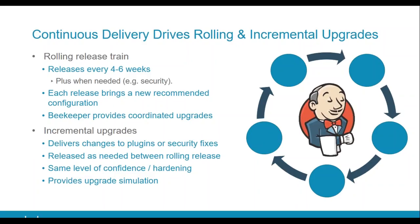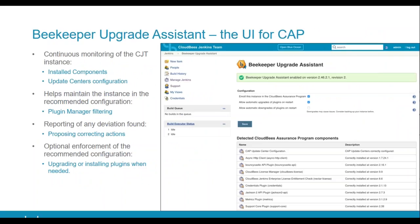The other release type is incremental upgrades — these refer specifically to plugins or security fixes delivered in between rolling releases. Rather than waiting four to six weeks, we can push out incremental upgrades and notify you in the product itself that there's an upgrade available. You can then decide whether to upgrade a plugin or accept a security release. It has the same level of confidence and hardening as a rolling release. I have a screenshot of the Beekeeper Upgrade Assistant, which is the front end for the CloudBees Assurance Program.